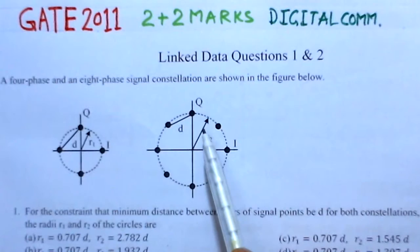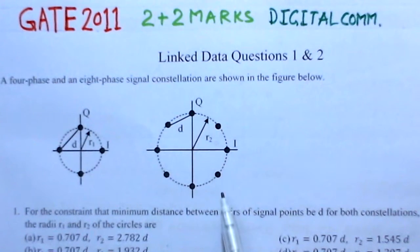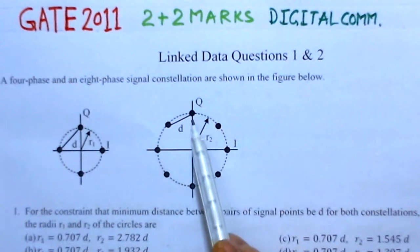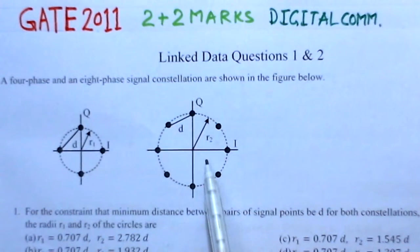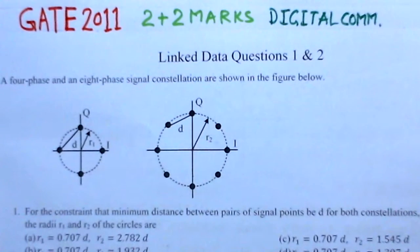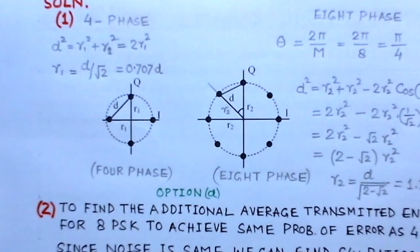This is what the minimum distance is. Now this system is 4-ary and this is 8-ary. What we have to find: in the first problem we have to find radii of these constellation circles, and in the second part we have to find additional signal energy needed for the 8-PSK system to achieve the same probability of error as the 4-PSK system.